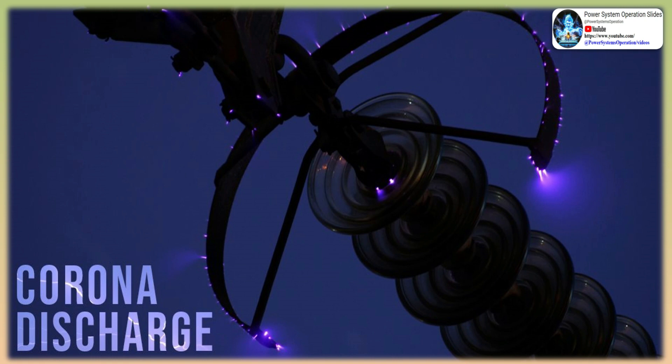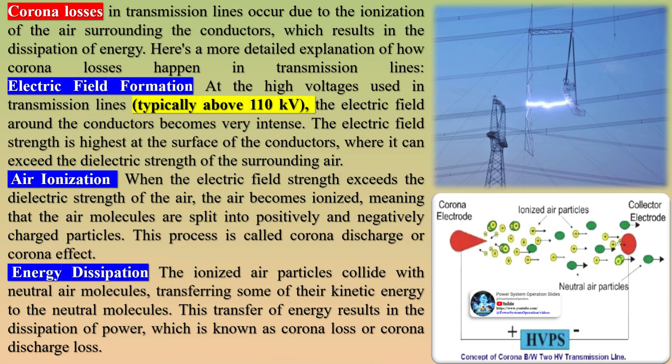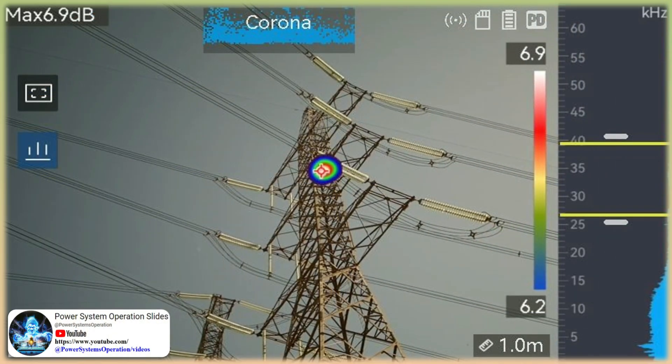Disadvantages of corona losses: Energy losses — corona losses result in the conversion of electrical energy into heat and light, leading to reduced efficiency in the transmission system and higher operating costs. Insulation damage — intense corona discharge can cause degradation and erosion of insulator surfaces, compromising their effectiveness and increasing the risk of flashover, which can lead to power outages and equipment damage. A non-sinusoidal voltage drop occurs in the transmission line due to non-sinusoidal corona current, causing interference with neighboring communication circuits. Ozone gas is produced due to the formation of corona, which chemically reacts with the conductor and causes corrosion.